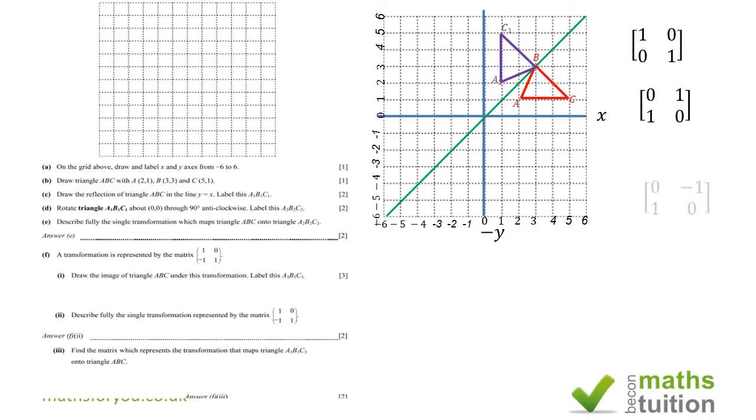Note that the position of B and B prime do coincide because B lies on the line y equals x, and therefore all the points on y equals x in this instance do not change, they remain the same.